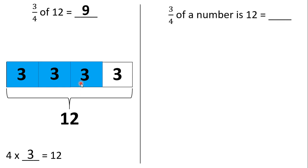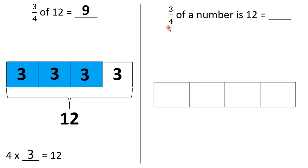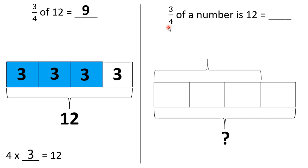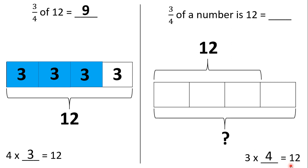Here we have: 3 fourths of a number is 12. So once again, we're going to start with a tape diagram broken up into four equal parts since our denominator is 4. We don't know what the entire tape diagram is worth yet — that's what we're trying to figure out. But we do know that three of these four parts added together equals 12. We need to figure out what each of these parts is worth. What number can we repeatedly add to get to 12? Repeated addition is the same as multiplication. So 3 times what equals 12? That would be 4. So each of these parts is worth 4. That's 4, 8, 12, and that's how we got the 12 here.